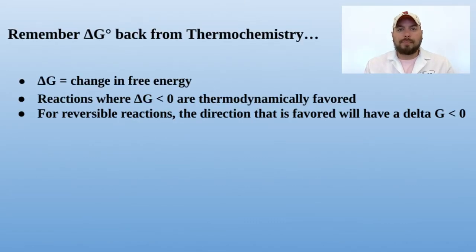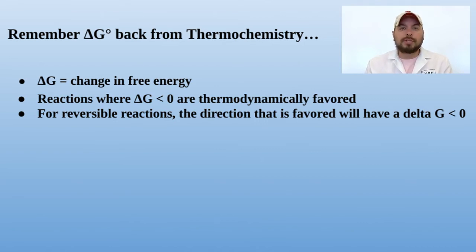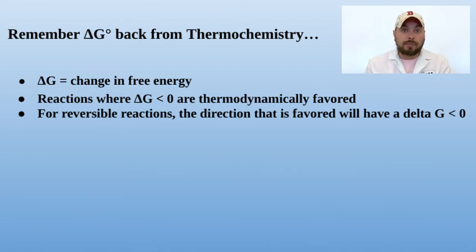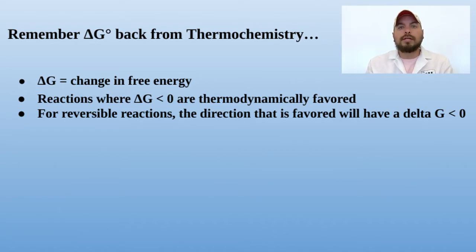Let's remember back to thermochemistry. In thermochemistry, we looked at delta G, the Gibbs free energy, as a measurement of spontaneity. If delta G was less than zero, then the reaction was thermodynamically favorable and spontaneous, and if delta G was greater than zero, then the reaction was not thermodynamically favorable and not spontaneous. We can connect this to the K value directly.